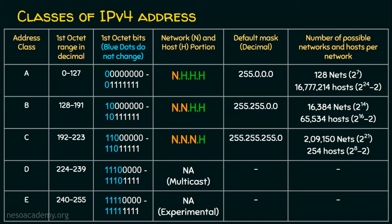That's the main drawback of classful addressing. In case we want a network needing 80,000 IP addresses, we cannot use Class B and need to go to Class A, which can cater to 1 crore 67 lakhs 77,214 hosts per network. Also, if we want to create a network with only 5 devices, we must go for Class C, where each network supports 254 hosts — so we waste 249 IP addresses.